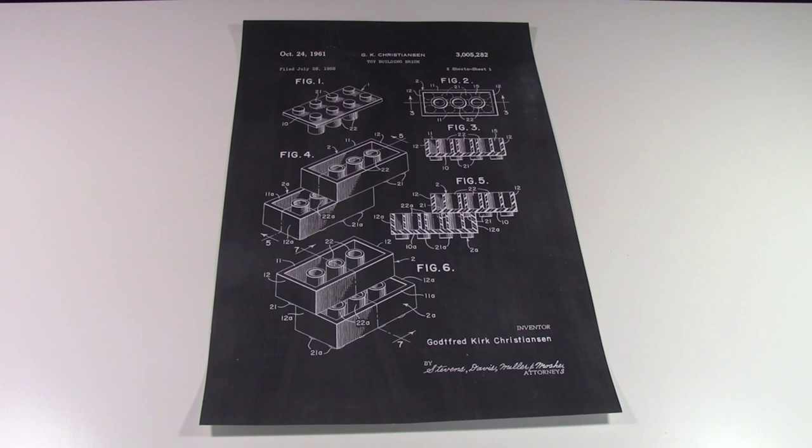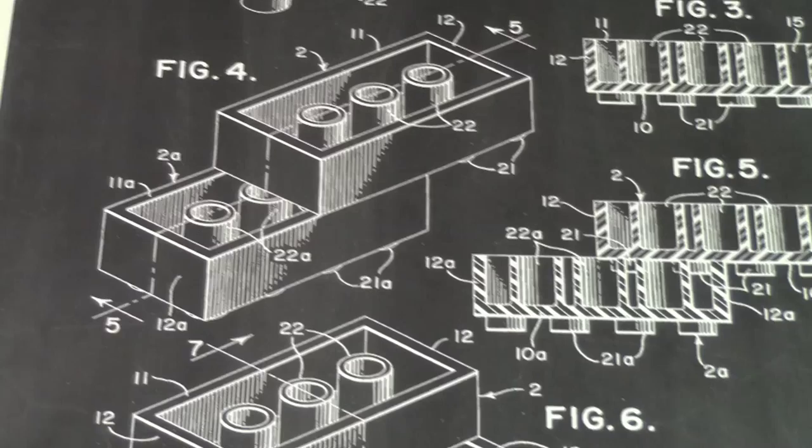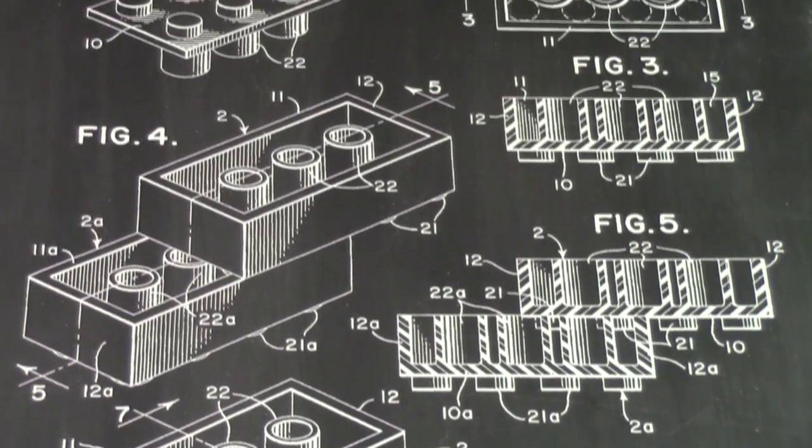Next patent I'm going to show you is the 2x4 brick pattern. So this one actually looks a little bit more complicated than the minifigure one. The minifigure one was straight up, but this one's got all sorts of numbers. I'm not really sure what these numbers represent. Maybe they're measurements, maybe they're not. Comment below if you know.